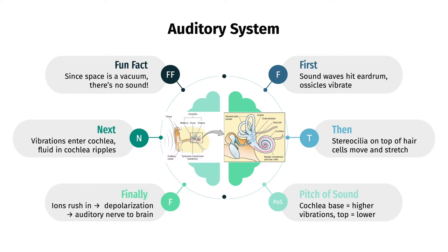The auditory transduction pathway is roughly as follows. Sound waves travel through our ear canal and hit our tympanic membrane, or eardrum, which causes three little bones or ossicles — called malleus, incus, and stapes — to move and amplify the vibration. Then the stapes pushes against the oval window, and the vibrations enter the snail-shaped cochlea in the inner ear. The sound vibrations cause fluid in the cochlea to ripple, which causes stereocilia, or hair-like bundles that sit on top of hair cells, to move.